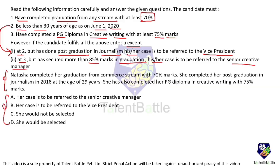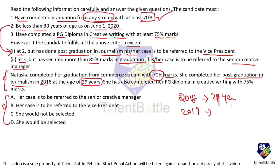Natasha completed her graduation from commerce with 70% marks — criteria one is satisfied since any stream is acceptable. She completed her post-graduation in journalism in 2018 at the age of 29 years. In 2018 she is 29, so in 2019 she would cross 29 and by the end of 2019 she will definitely be 30. According to the criteria, she should be less than 30 years by 2020, so this criteria will not be satisfied — she will be at least 30 or more than 30. Criterion two is not satisfied.